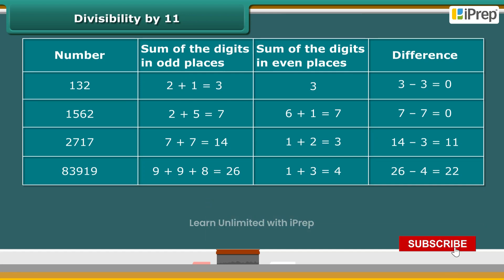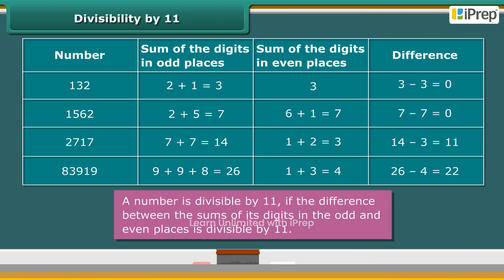It is a general rule. A number is divisible by 11 if the difference between the sums of its digits in the odd and even places is divisible by 11.